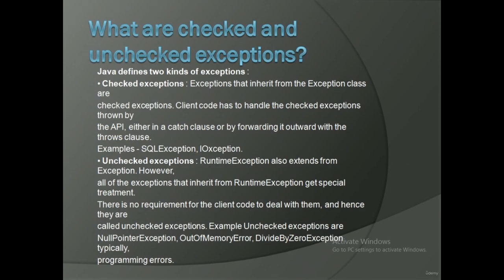What are checked and unchecked exceptions? Java defines two kinds of exceptions. Checked exceptions inherit from the Exception class; client code must handle them either in a catch clause or by forwarding with the throws clause. Examples: SQLException, IOException. Unchecked exceptions: RuntimeException also extends from Exception; however, all exceptions that inherit from RuntimeException get special treatment — there is no requirement for client code to deal with them. Unchecked exceptions include NullPointerException, OutOfMemoryError, and divide by zero exception — typically programming errors.